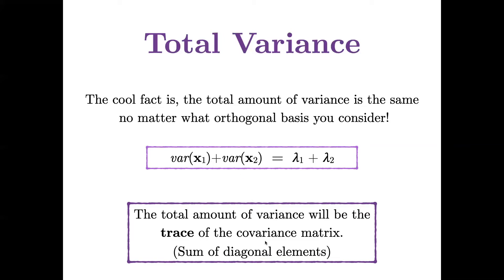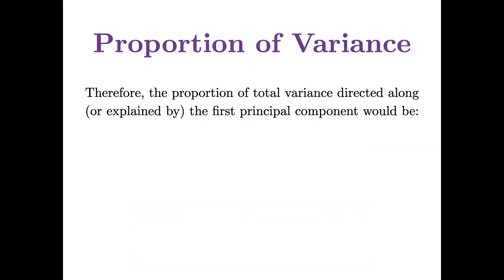Of course, in the covariance matrix, those off-diagonal elements give me the covariance between each pair of variables. So if I have this expression for total variance, I can also start to talk about proportion of variance. So the proportion of the total that would be directed along, or you might say explained by, the first principal component would be lambda 1 over the total. And likewise for the second component in our two-dimensional picture here.